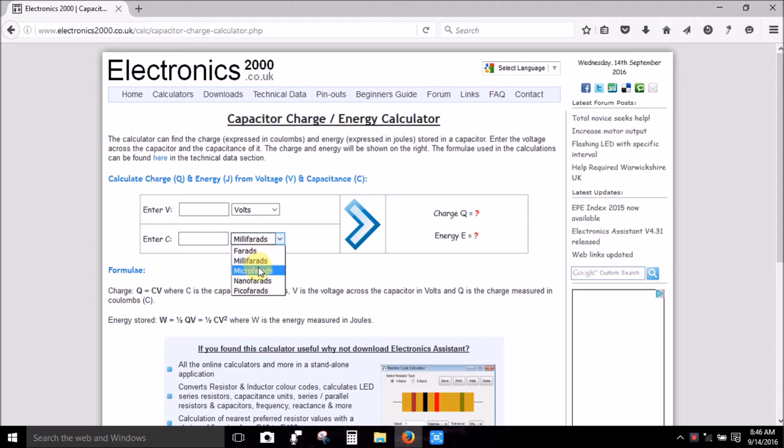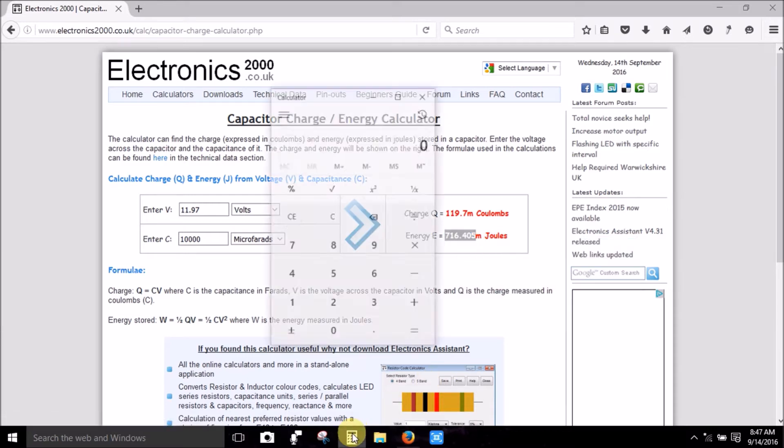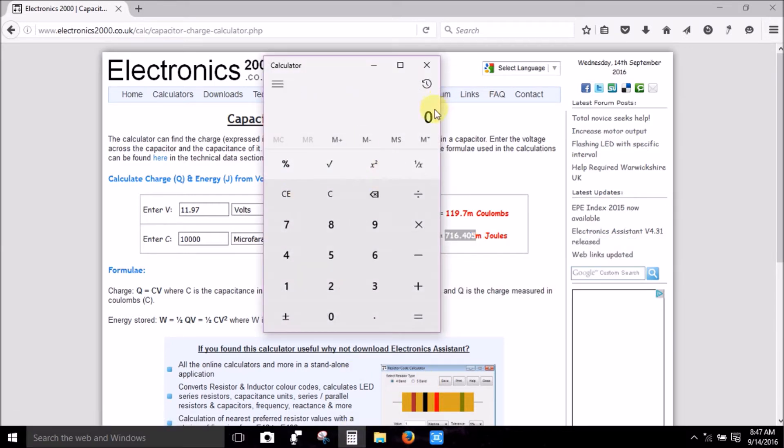The energy that we started out with was 11.97 volts at 10,000 microfarads, so we started out with 716.405 millijoules, and the millijoules is right here, that M, that's millijoules. So what we'll do is we'll copy that, bring up our old calculator here, and we will paste that in.